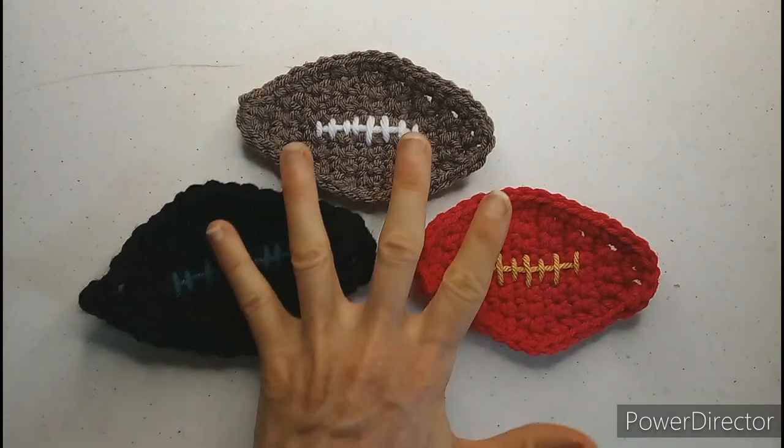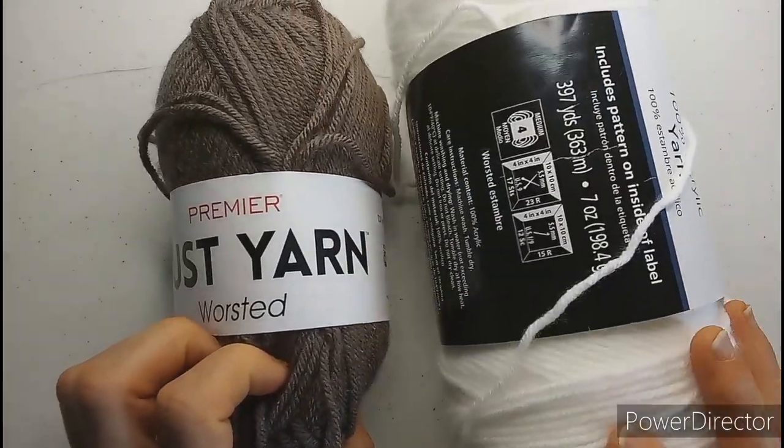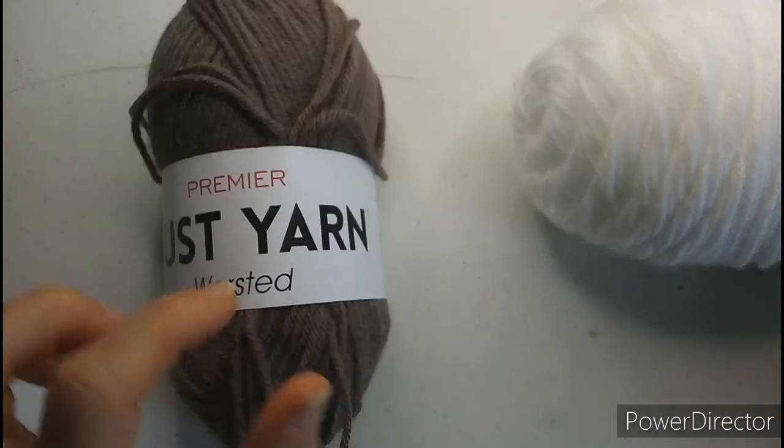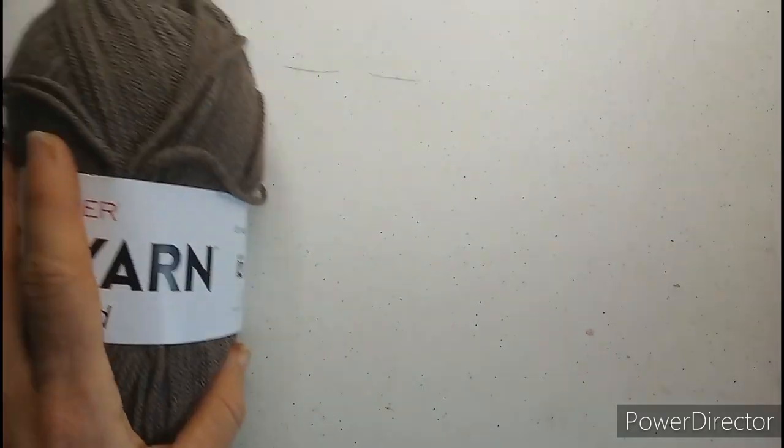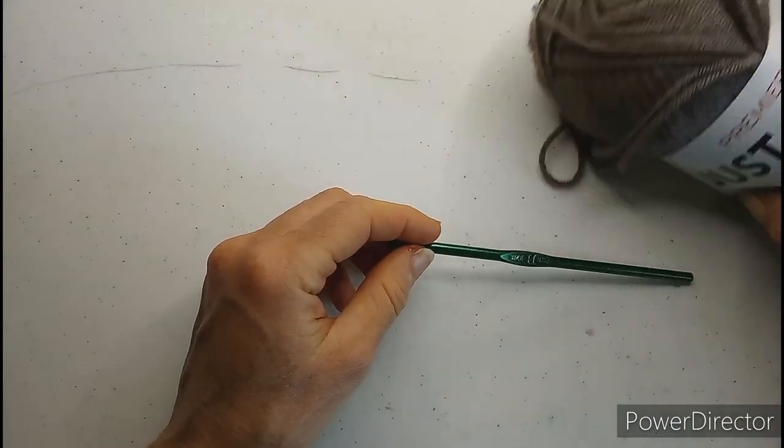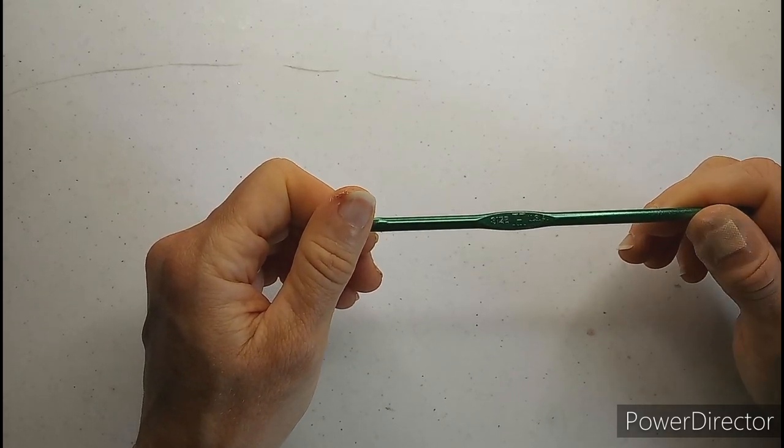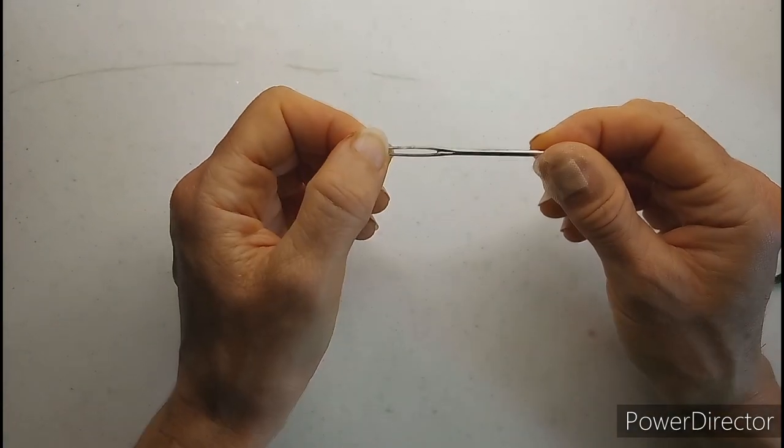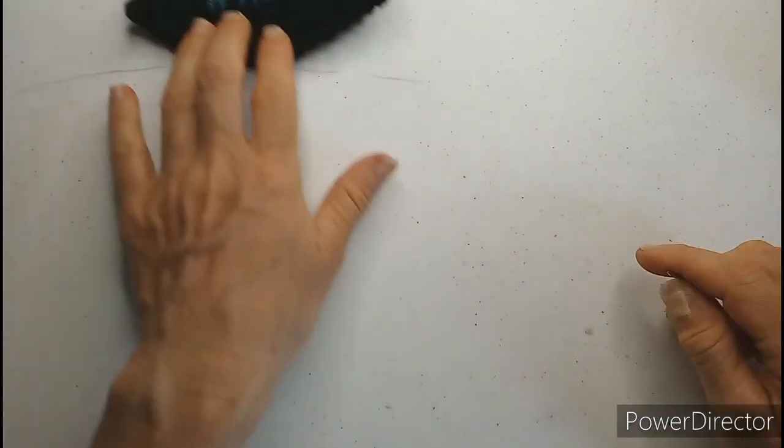So I want to show you first your materials you're going to need. You'll need whatever color you're going to use for the football, and then a color for the stitching on the thread part here. The yarn is worsted weight, and the crochet hook that I used is a size H, and you're going to need a yarn needle to thread through your stitching for the football.